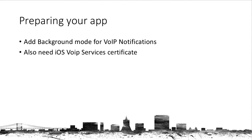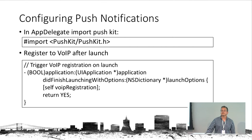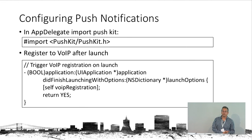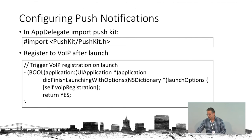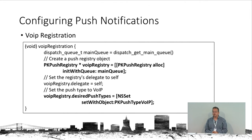To use PushKit, prepare your application in Xcode by adding a background mode called VoIP notifications. You also need to create an iOS VoIP services certificate and compile the application with that certificate. In your app delegate, import PushKit and when your application finishes launching, do VoIP registration by creating a PKPushRegistry object and telling it the desired push type is push type VoIP. The main advantage of push type VoIP is it has very high priority in APNS, so you get it with minimal latency.